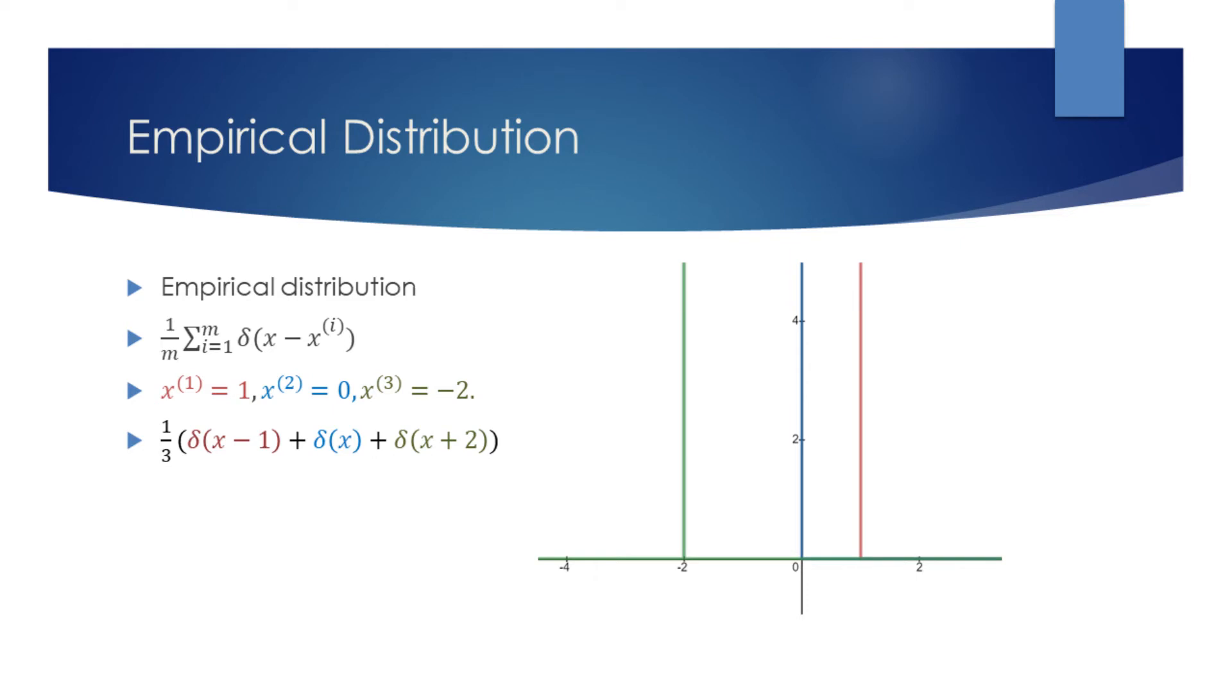On the slide, we can see an example of the empirical distribution with 3 data points at x equals 1, 0, and minus 2. Since we have 3 data points, m equals 3. If we substitute this information in the function for empirical distribution, we will get the result as in line 4 on the left. On the right, we can see the corresponding graph of this function.